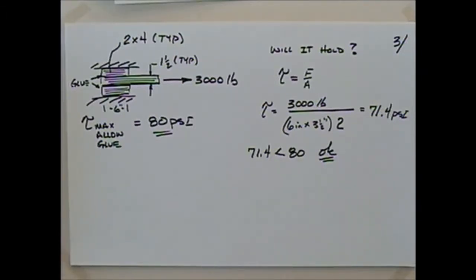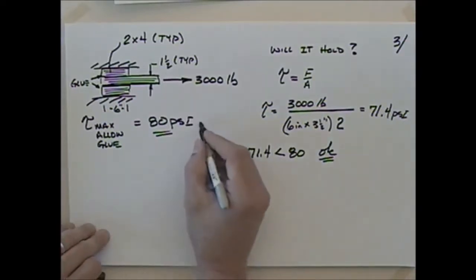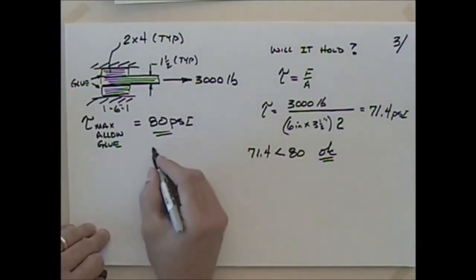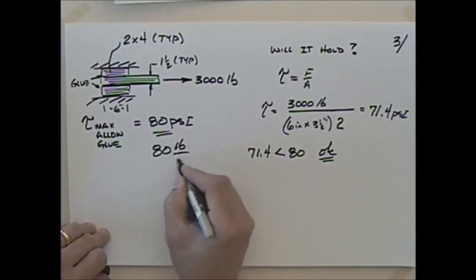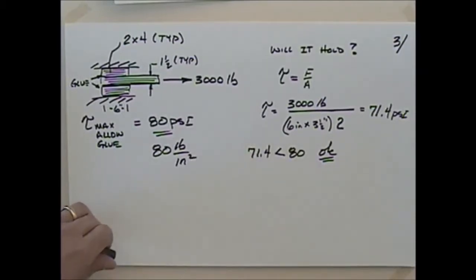The 80 PSI — is that the same value per single shear? Yes, it is. It's all in one surface. It's still just 80 PSI. PSI is pounds per square inch. So with double shear, we're just giving more square inches.